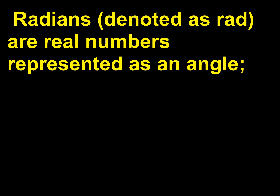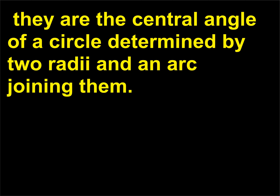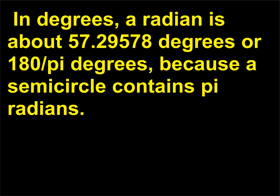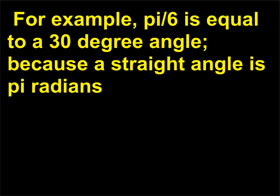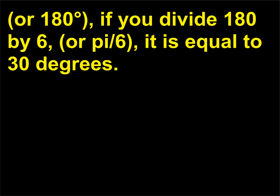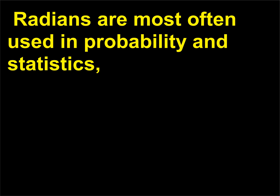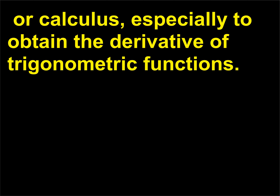Radians, denoted as rad, are real numbers represented as an angle. They are the central angle of a circle determined by two radii and an arc joining them. In degrees, a radian is about 57.29578 degrees, or 180/π degrees. Because a semicircle contains π radians, for example, π/6 is equal to a 30-degree angle, because a straight angle is π radians, or 180 degrees — if you divide 180 by 6, or π/6, it is equal to 30 degrees. Radians are most often used in probability and statistics, or calculus, especially to obtain the derivative of trigonometric functions.